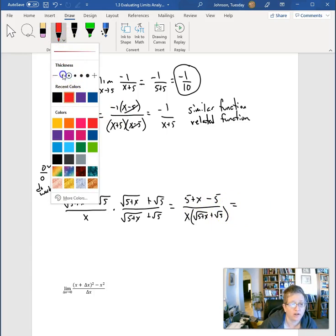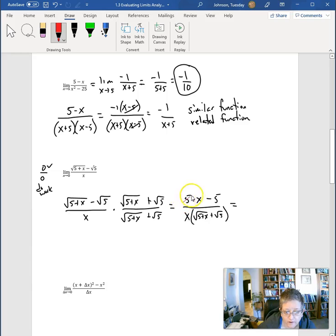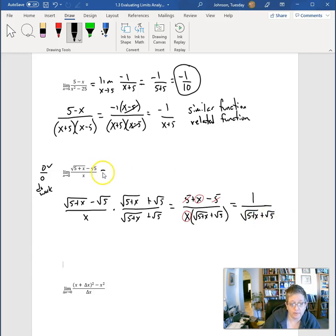Notice here, the 5 and the negative 5 cancel out. So I'll have an x over x. So I'm left with a 1 in the numerator, exactly like if we factored out a positive 1. And square root of 5 plus x plus the square root of 5. So this is the limit we're going to find.